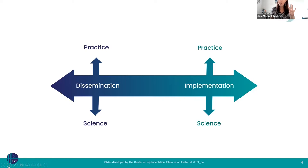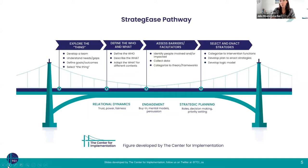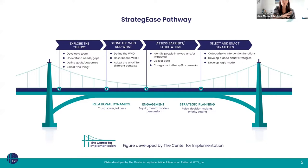We do that using four foundational pathways. I'll talk about one quickly. I'm going to start with our first pathway, which I think is a great place when thinking about sharing your research: how can you actually go about designing what it is you're going to share, in a way that it will be implemented? We call this the strategies pathway. We talk about exploring the thing — what is it you're trying to implement? What's the need and the gap? What are your goals and what outcomes do you want to reach? From there you define who is being asked to do something differently, and exactly what you're asking them to do differently.